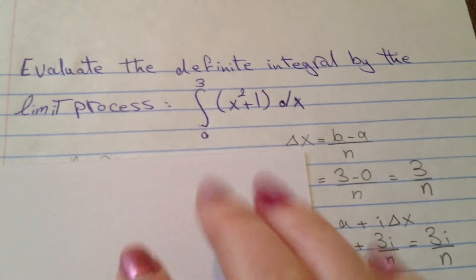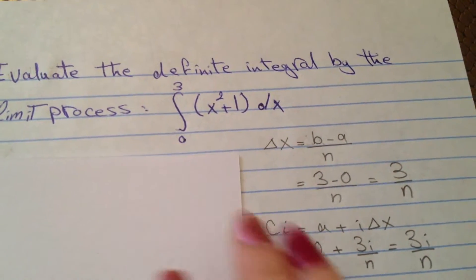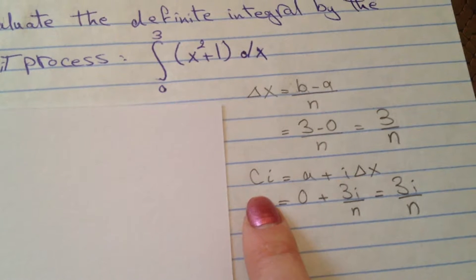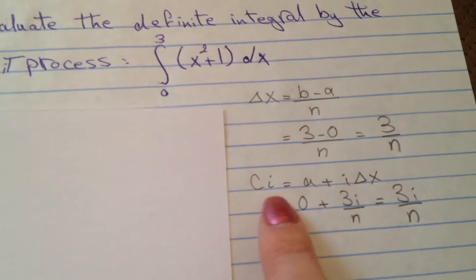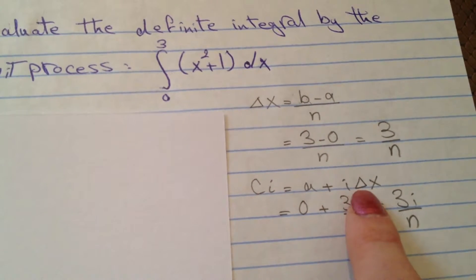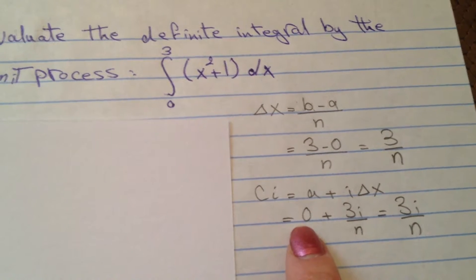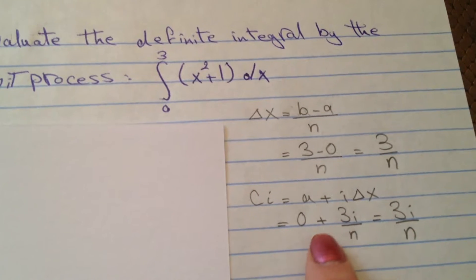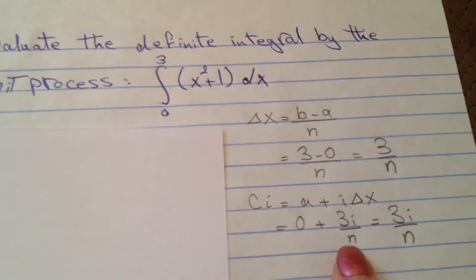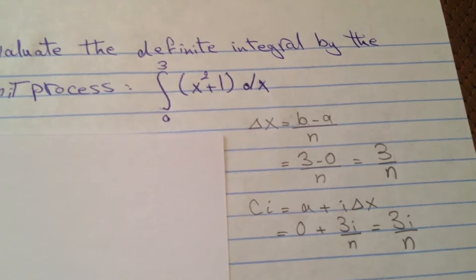Second, we have to find cᵢ, which we have as cᵢ equal to a plus i·Δx. We have a is 0, plus 3i divided by n. So we have 3i divided by n.